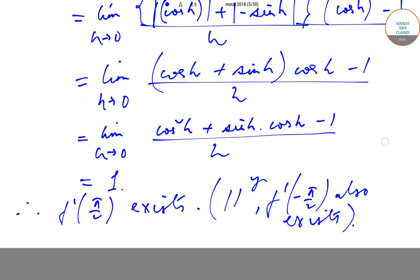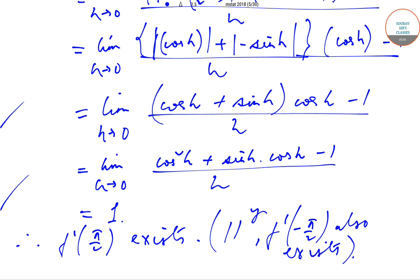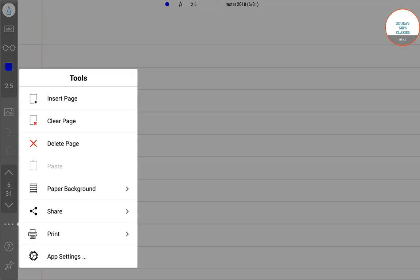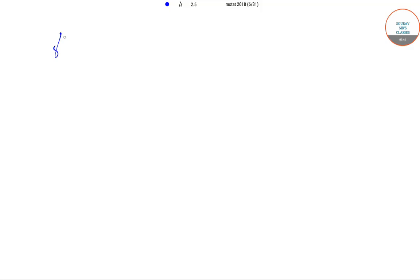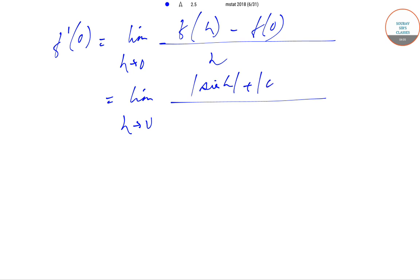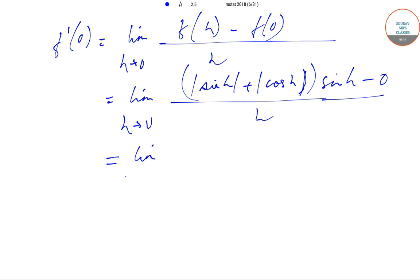Now we'll find f'(0). Let me insert a new page. f'(0) is given by limit h tends to 0 of [f(h) - f(0)] / h. f(0) = |sin 0| + |cos 0| = 0 + 1 = 1. So the expression becomes limit h tends to 0 of [|sin h| + |cos h| - 1] / h, which gives limit h tends to 0 of [sin(h) + cos(h)] · sin(h) / h.